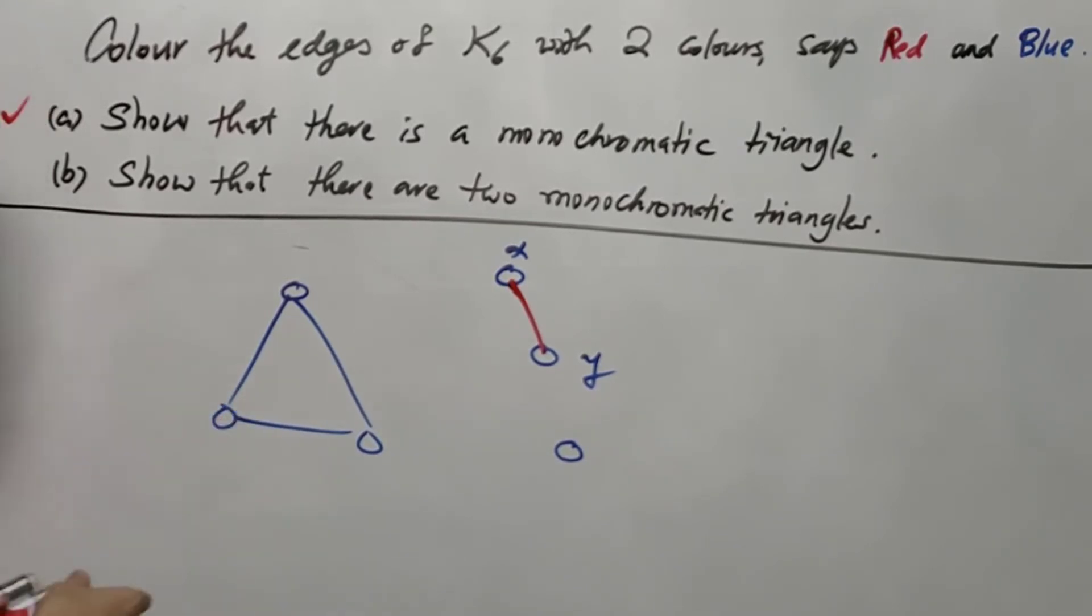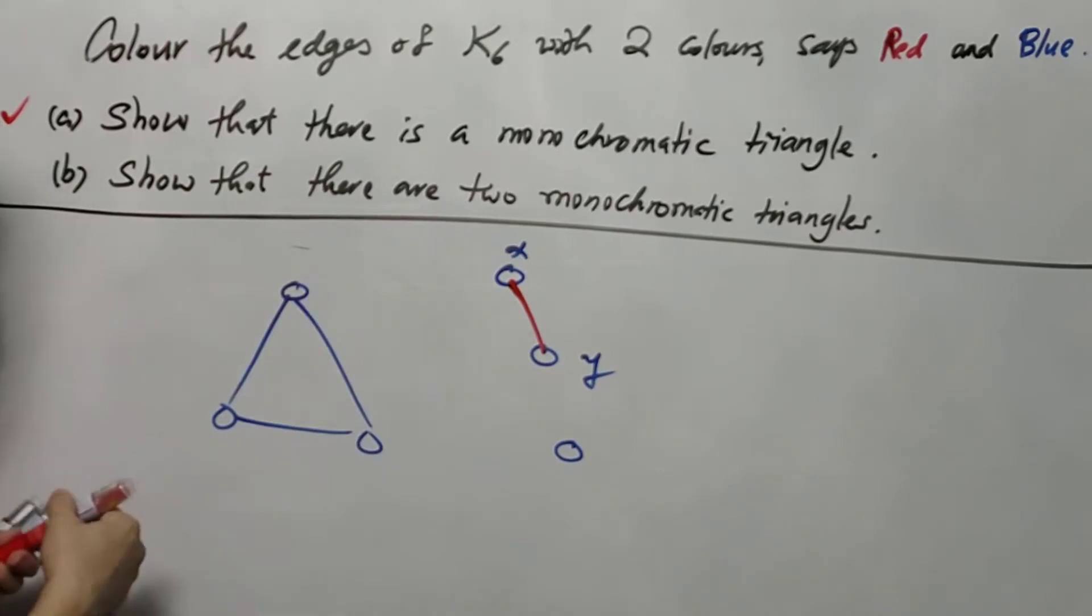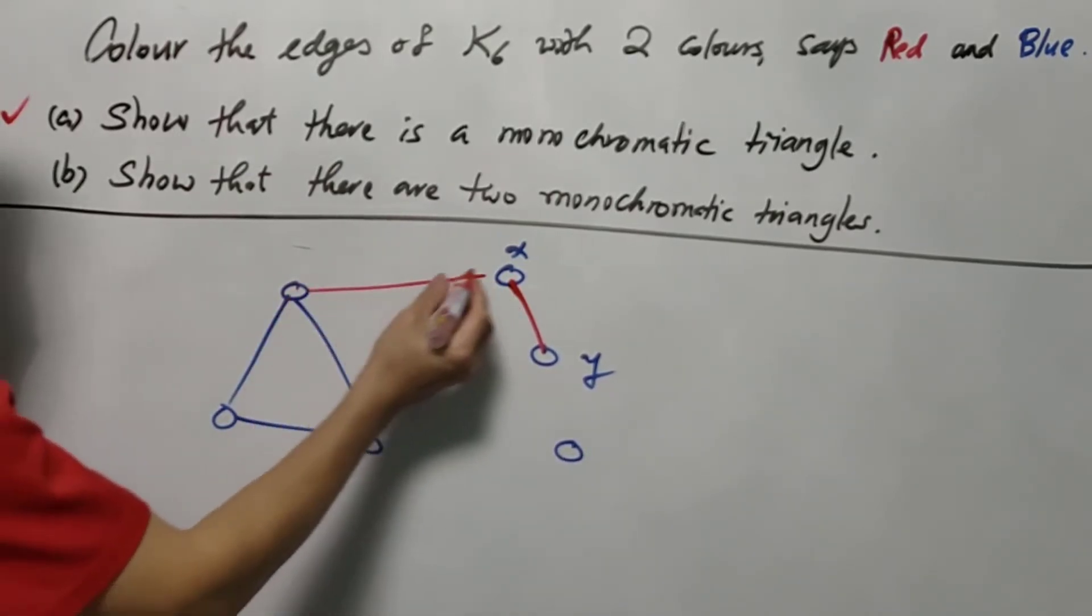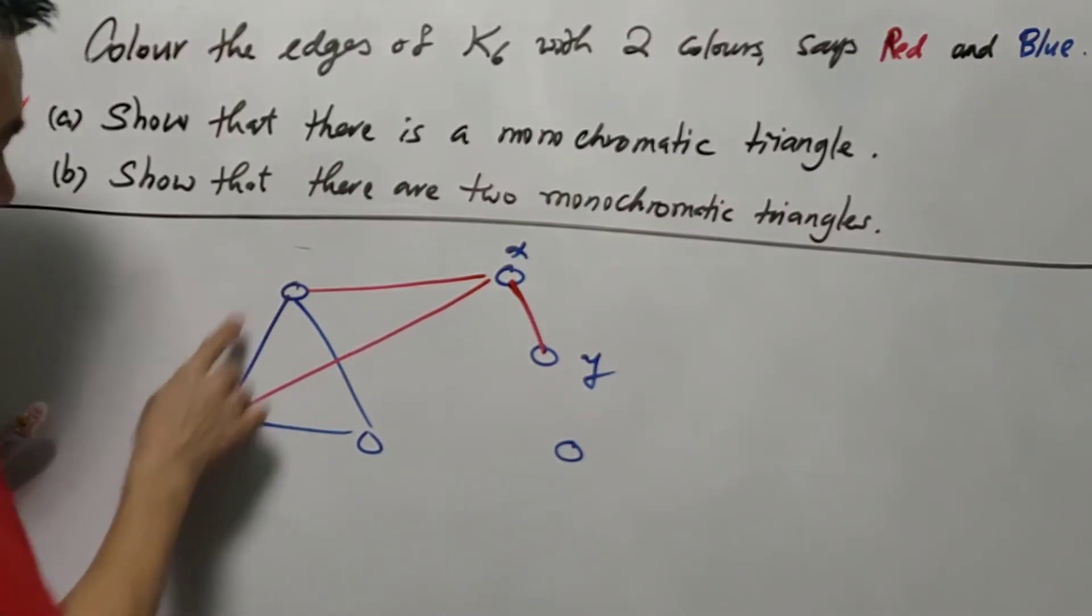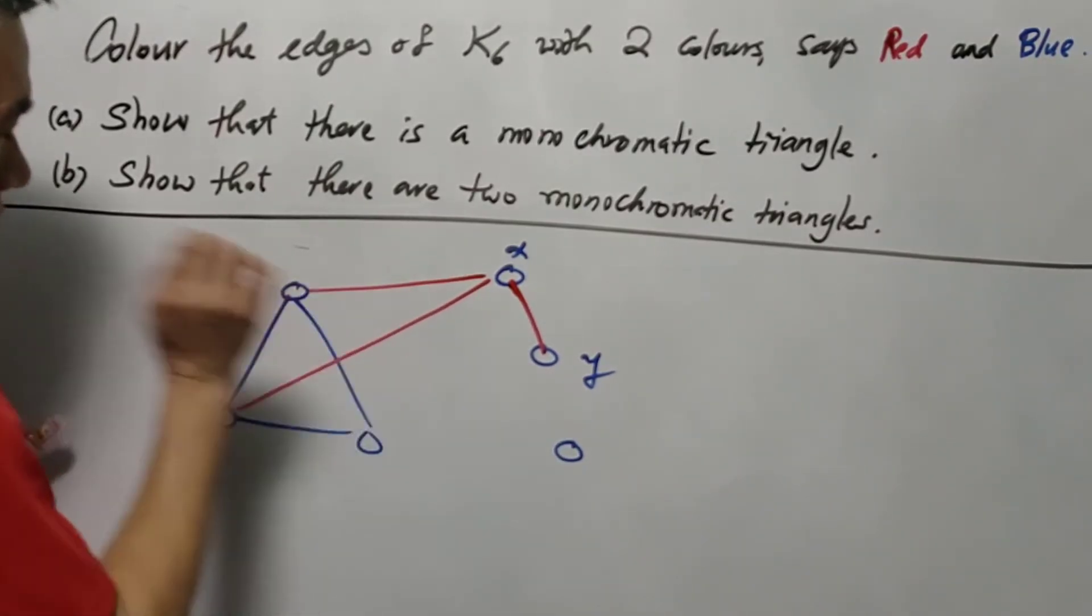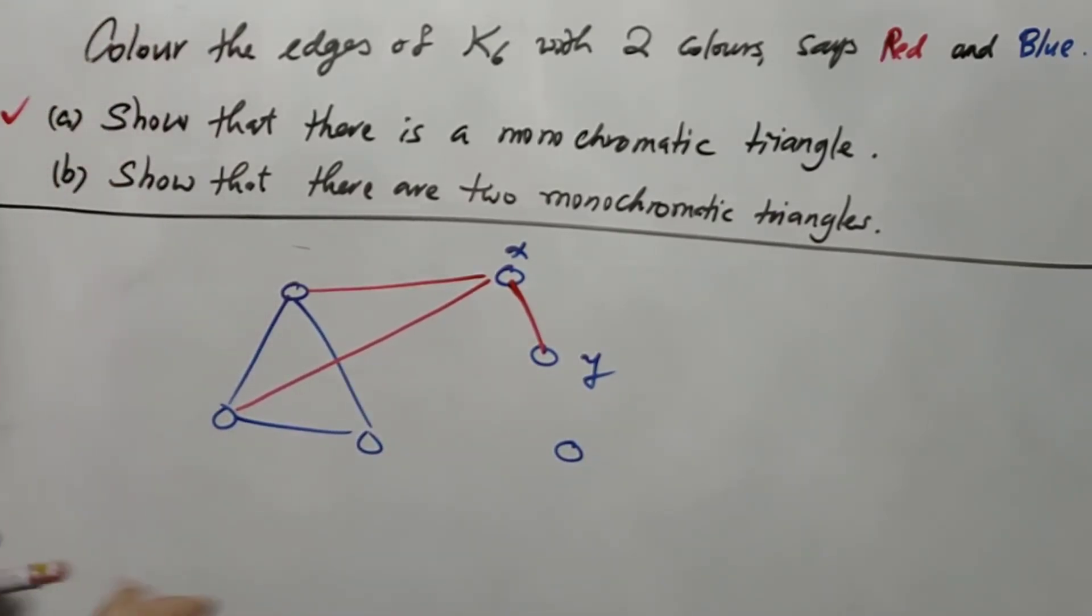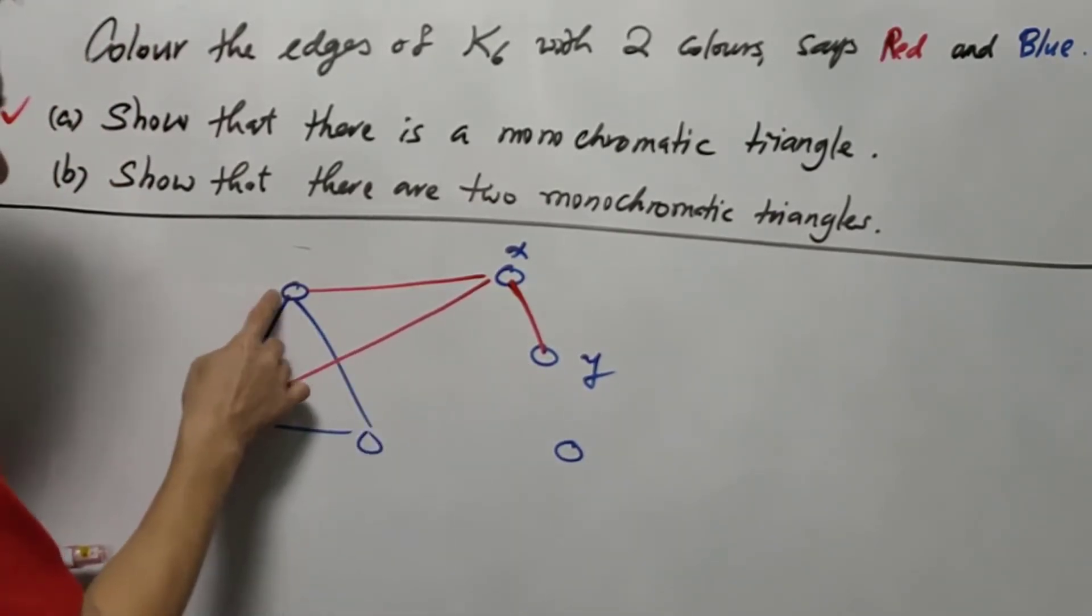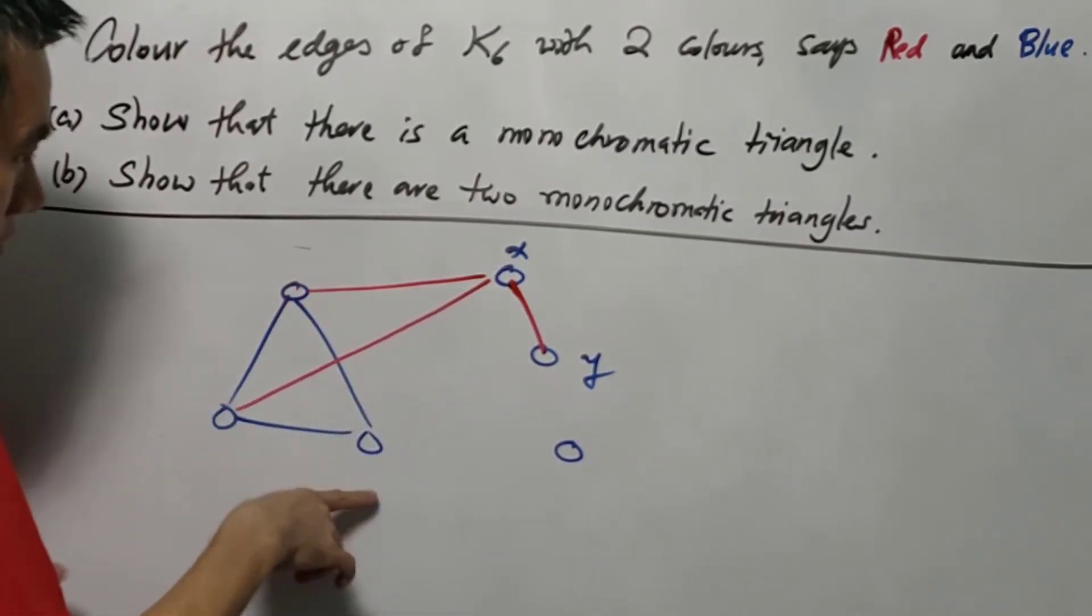Meaning that from x, there must be at least two red edges joined to these three vertices. Let's say these are the two vertices that joined to x using red edges. And this also happened to y. It must be at least two red vertices out of three.